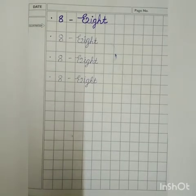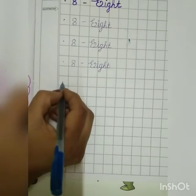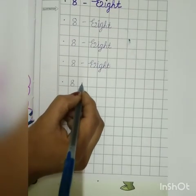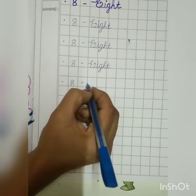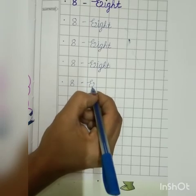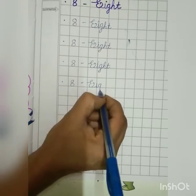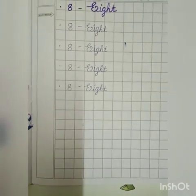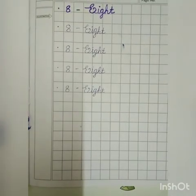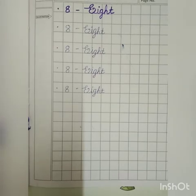Understand, kids? One more time — 8, E-I-G-H-T. I hope you understand the pattern of writing the number name of 8. You have to write down the number name of 8 in your maths notebook. Do learning, do practice at your home. Thank you, kids. Bye-bye.